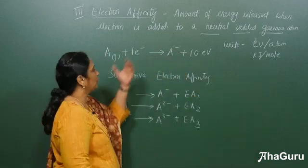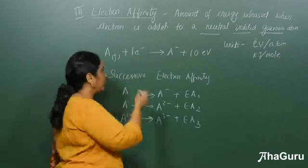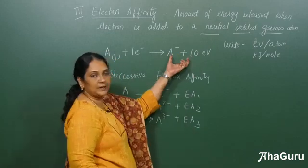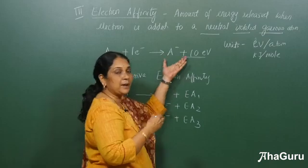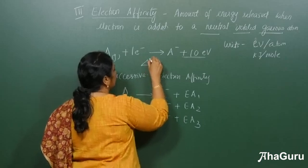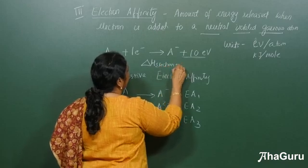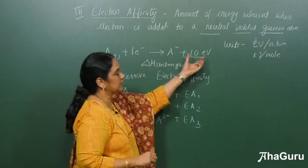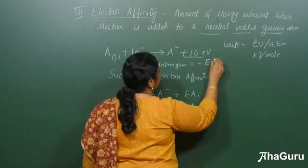In terms of a reaction: if I take an atom in the gaseous state and add one electron, it will become A minus and some energy is released. In terms of enthalpy, we call this delta H electron gain enthalpy. Always remember that electron gain enthalpy is equal to minus Ea.